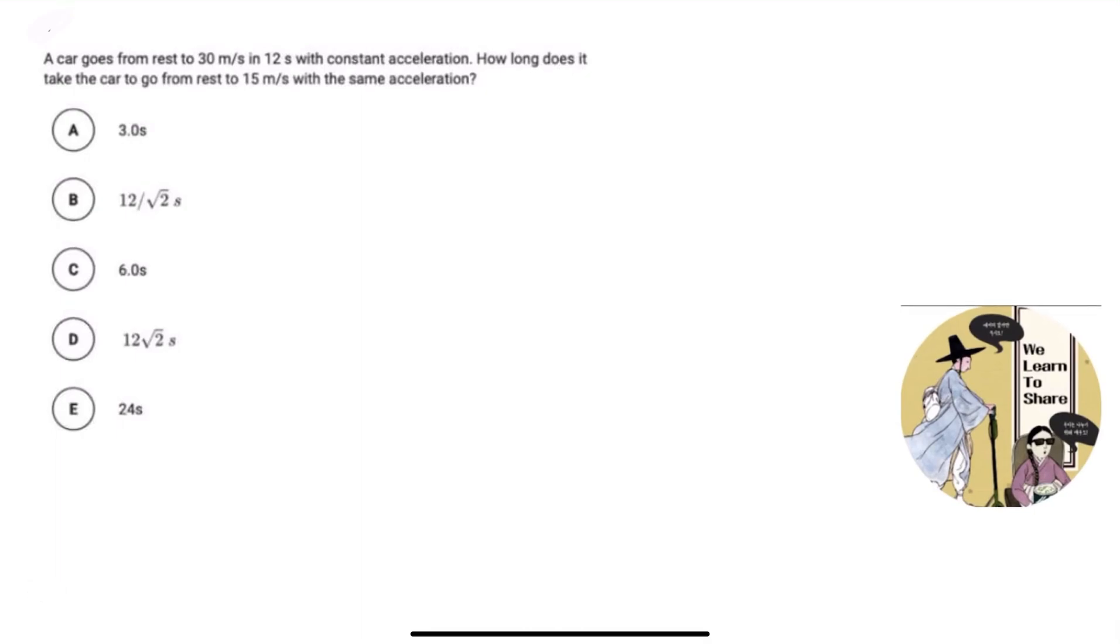Hello guys, this is Elena from We Learn to Share. In this video we're going to cover this question from Physics 1. Now let's read the question: A car goes from rest to 30 meters per second in 12 seconds with constant acceleration. How long does it take the car to go from rest to 15 meters per second with the same acceleration? So now let's first organize what we got from reading the question.